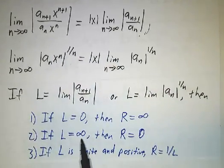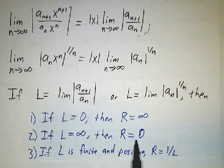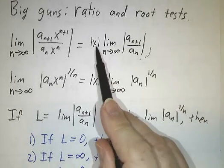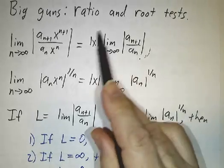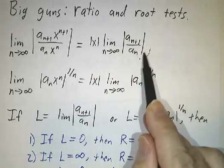If L is infinite, then the radius of convergence is zero. Because no matter how small x is, this whole thing blows up, and so the series diverges.